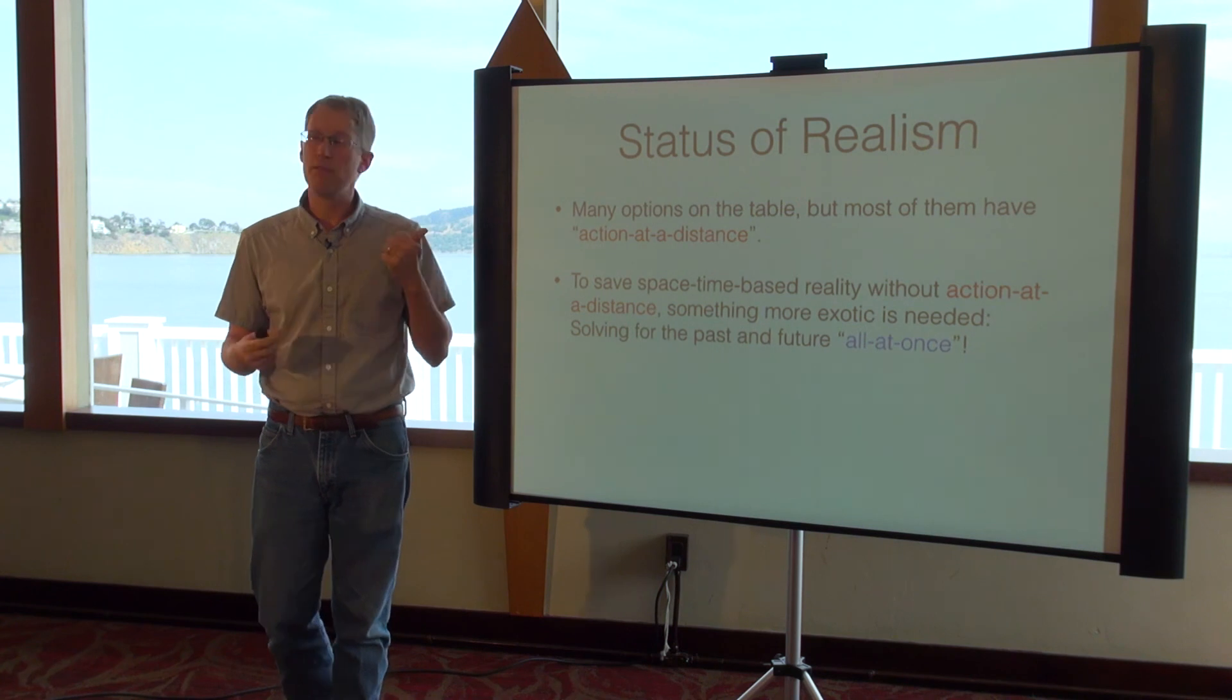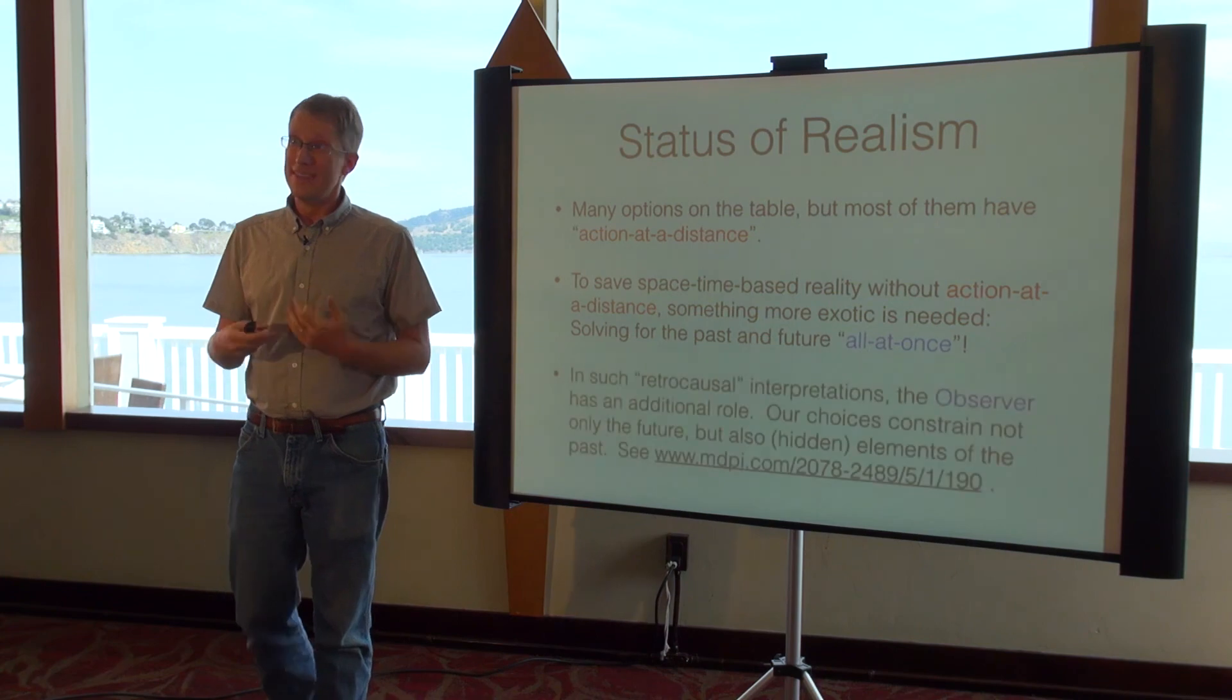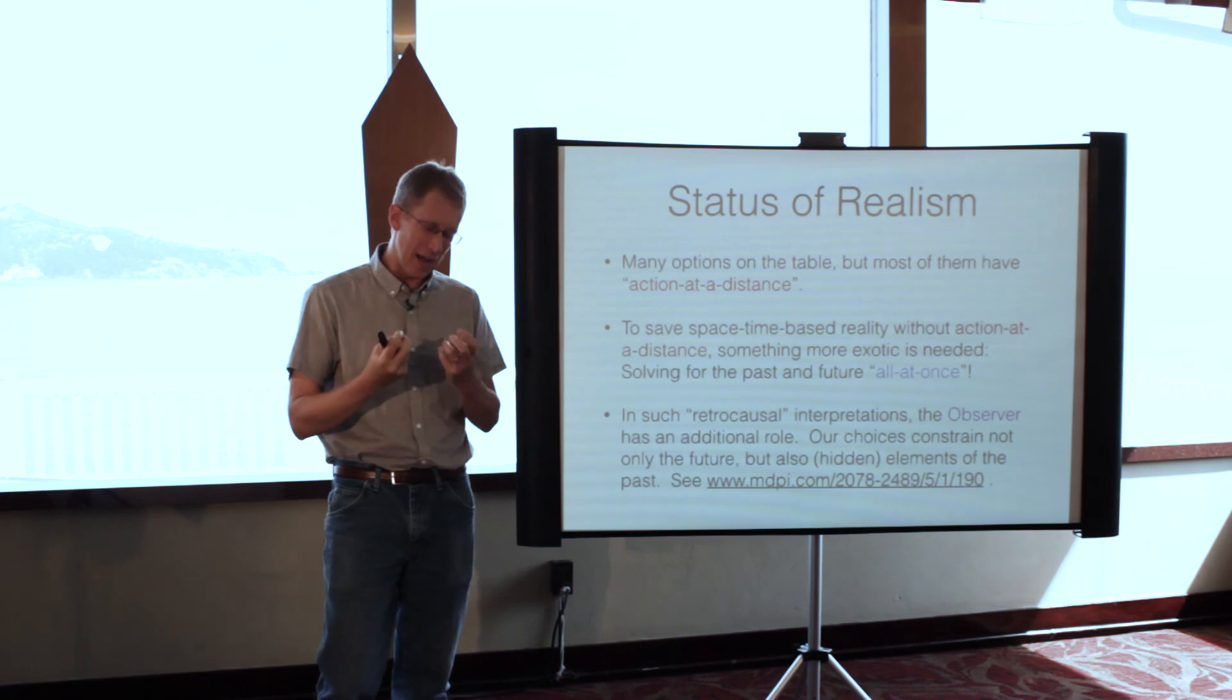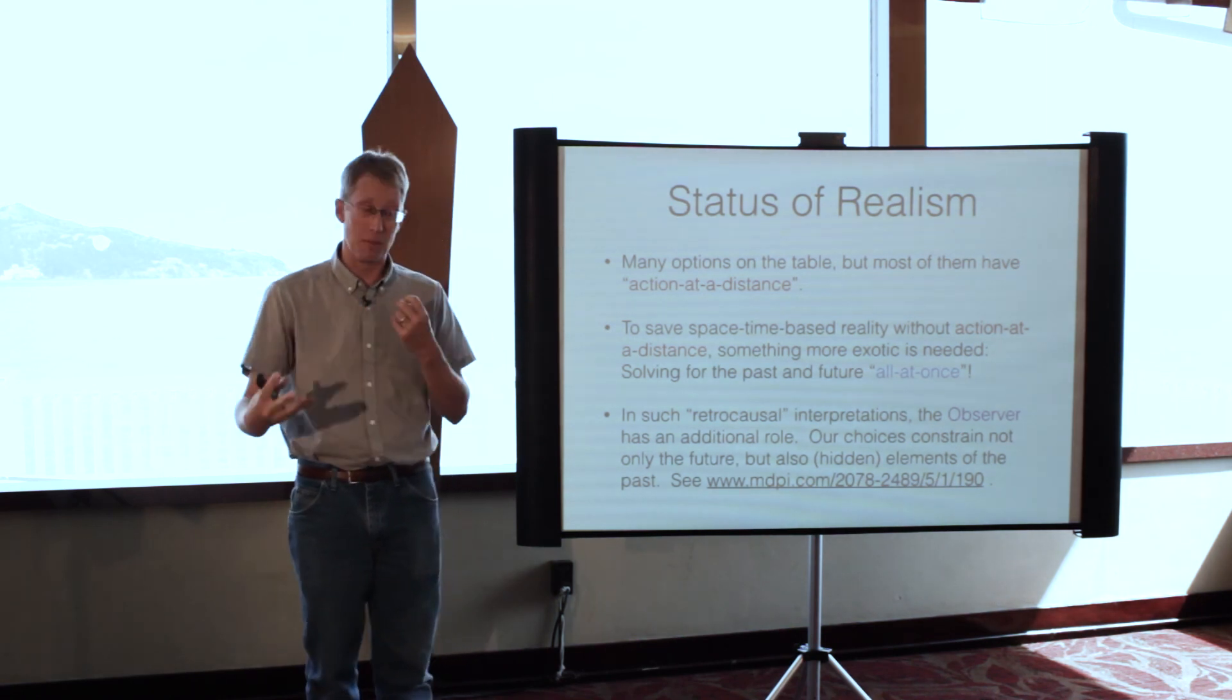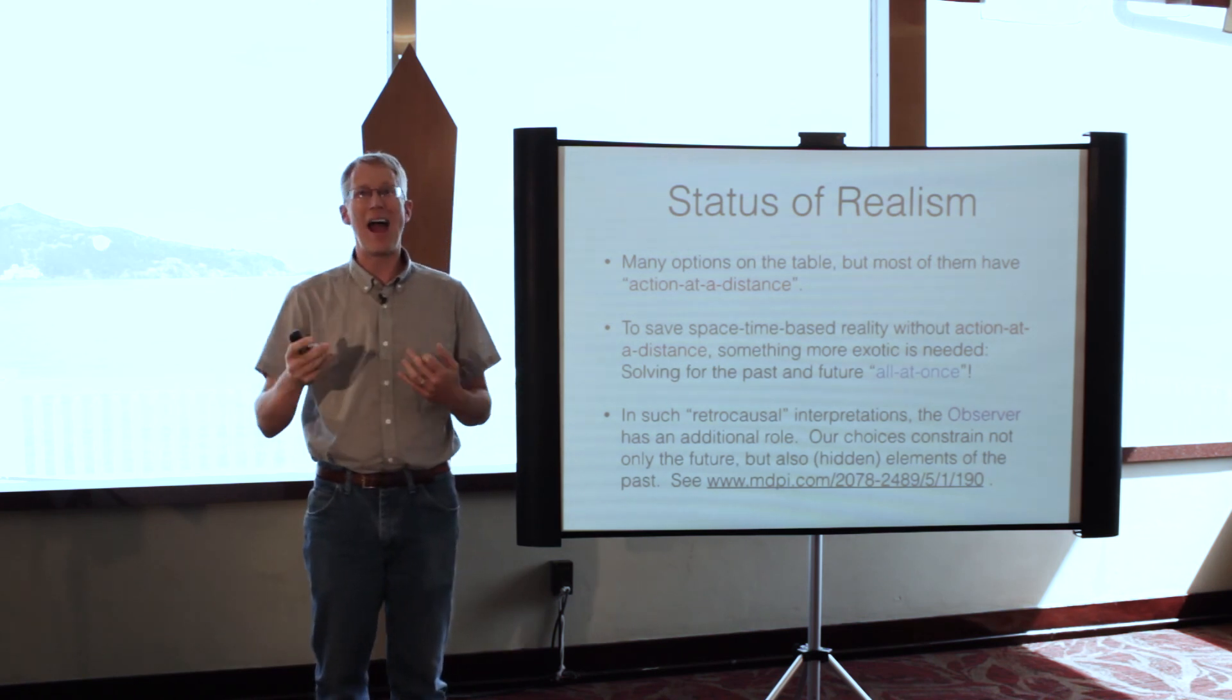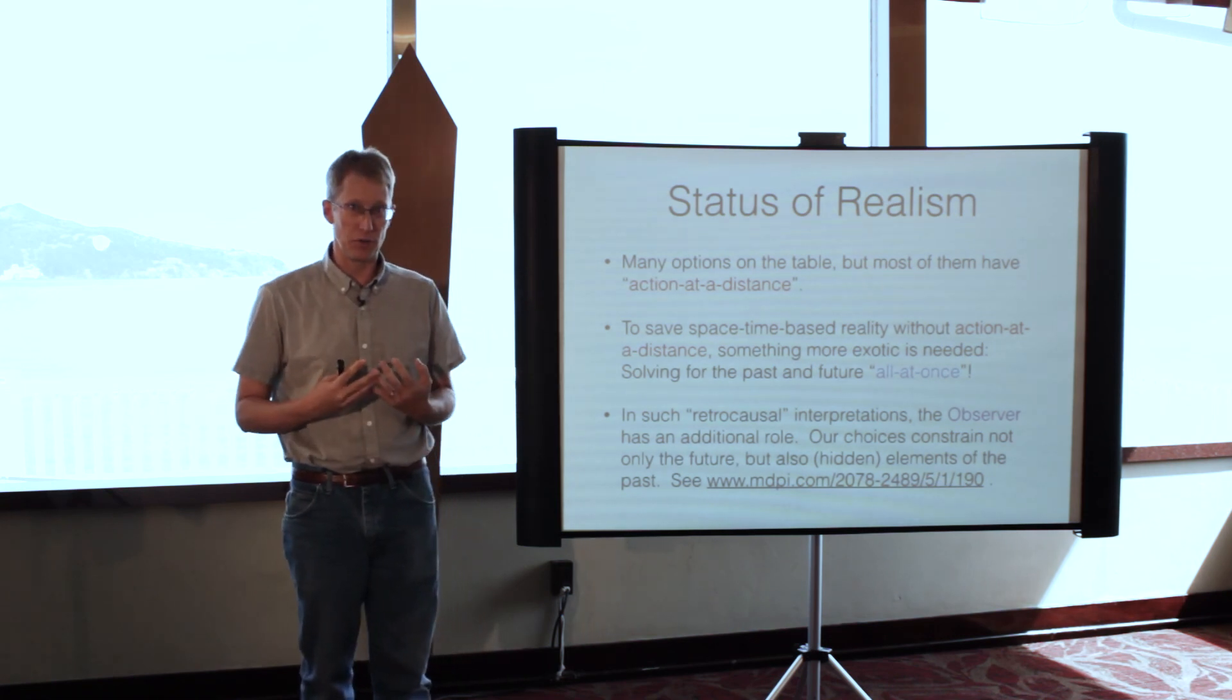If you do that and get away from this one time step at a time, there actually are some ways out of these dilemmas. You can get reality back into space-time without action at a distance. If you do that though, now suddenly the observer has this other strange role because when you solve space-time all at once, what happens in the future is going to impact what's happening now. Like a big four-dimensional jigsaw puzzle, the piece in the future has to match the piece now and the piece in the past. If that's the case, when observers make choices and make settings, they're actually constraining the past. So this falls in the category of retrocausal interpretations.